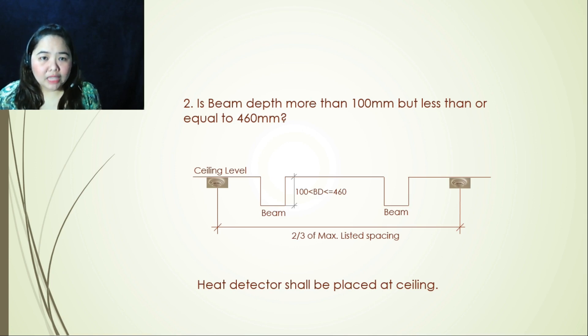Now we have our second argument: beam depth more than 100 millimeters but less than or equal to 460 millimeters. So looking at the illustration, these are your beams. If this is the case, you will then consider two-thirds of maximum listed spacing. And you cannot put your smoke detector at the bottom of the beam, it can only be placed in the ceiling underside.